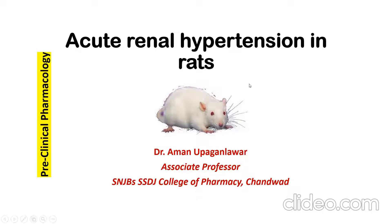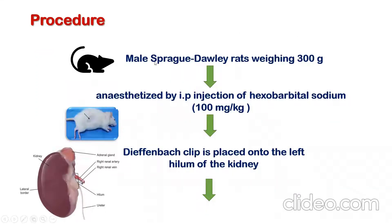In the procedure, we have to take the male HD rat whose weight is between 200 to 300 grams. Then you can anesthetize the animal by intraperitoneal injection of hexobarbital sodium. If you have another safe anesthetic agent, you can use that anesthetic agent for anesthetizing the animal.